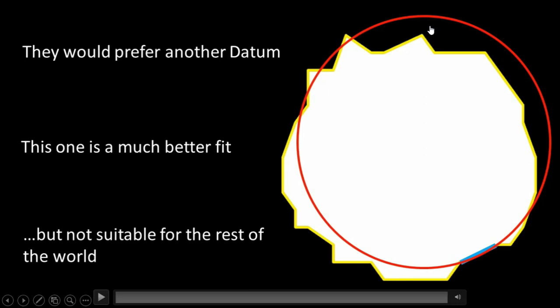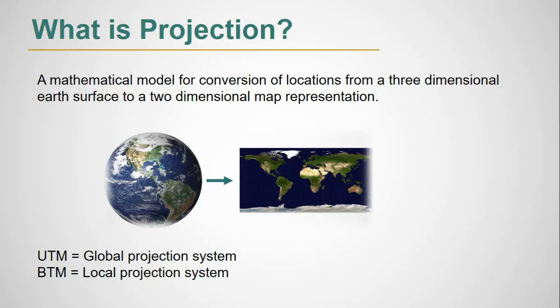What is projection? Projection is a mathematical model for conversion of locations from a three-dimensional Earth surface to a two-dimensional map representation. For clarifying the concept of projection, watch a video.